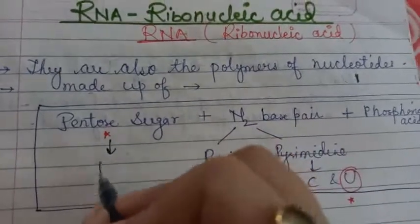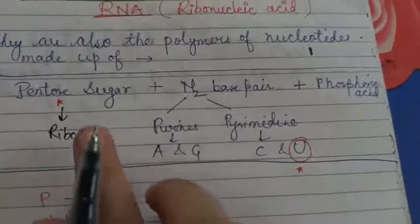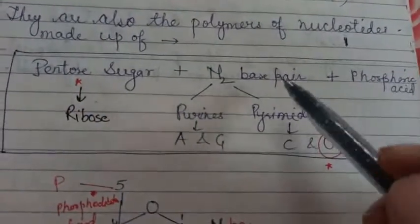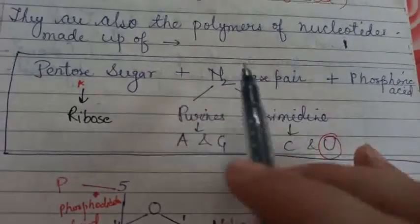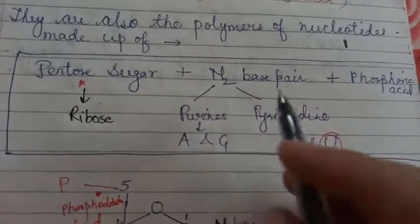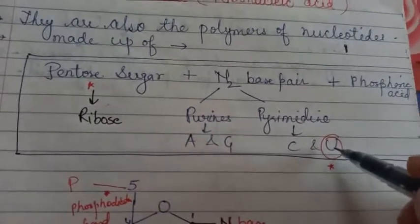In RNA the sugar is ribose and DNA it was deoxyribose. So ribose sugar is one difference between DNA and RNA. And the second one is in the nitrogenous base pairs. In the DNA it has ATCG but in the RNA uracil is present in place of thymine.